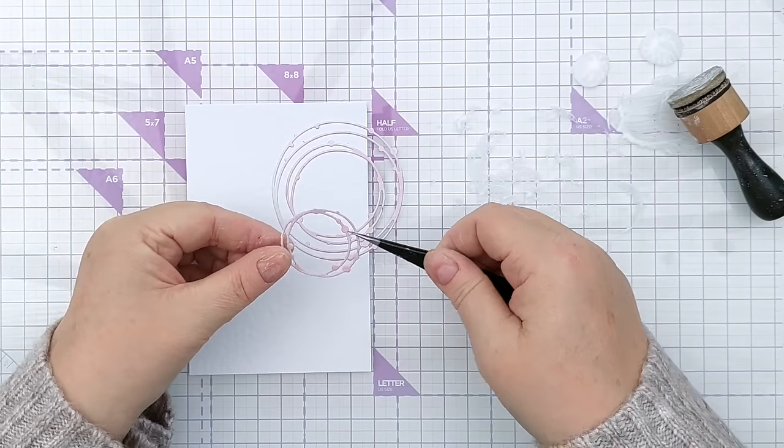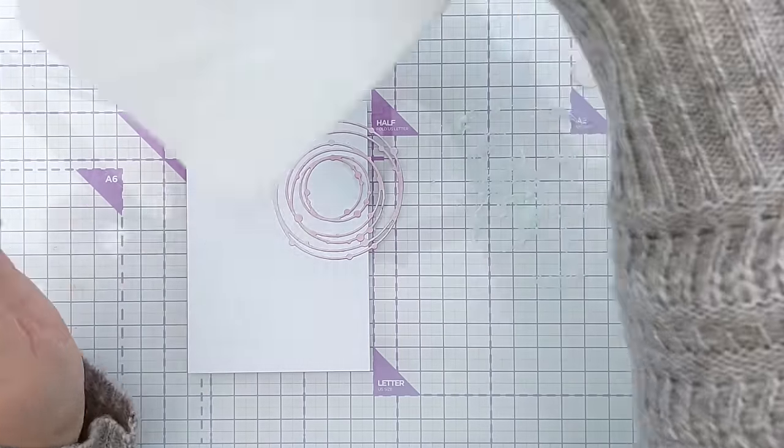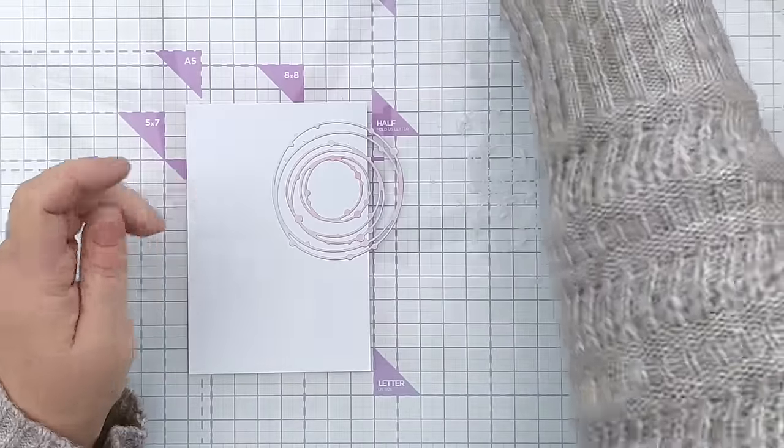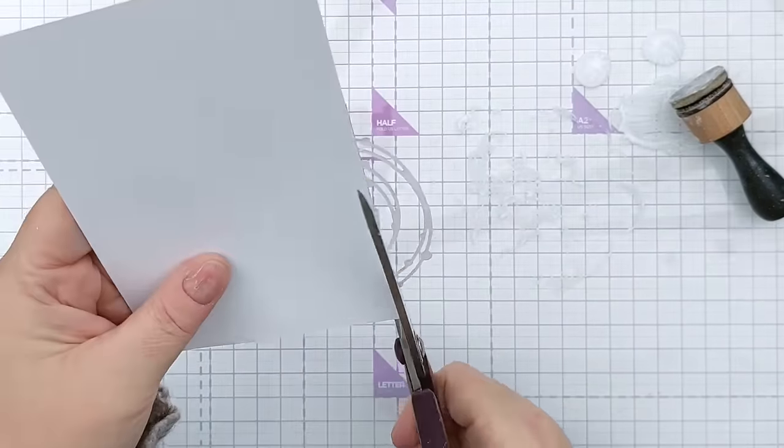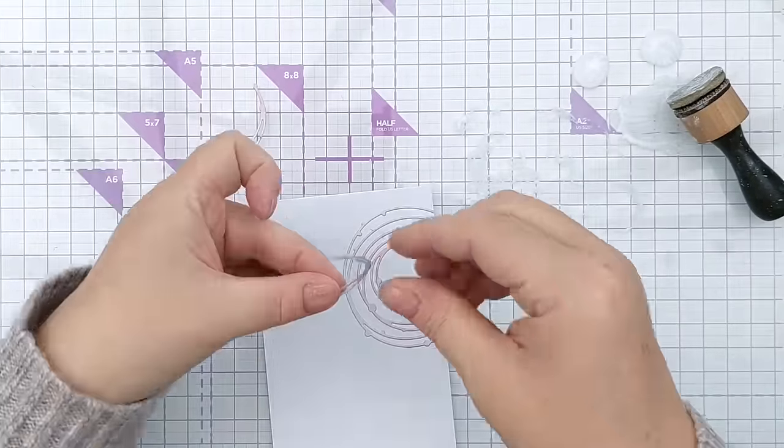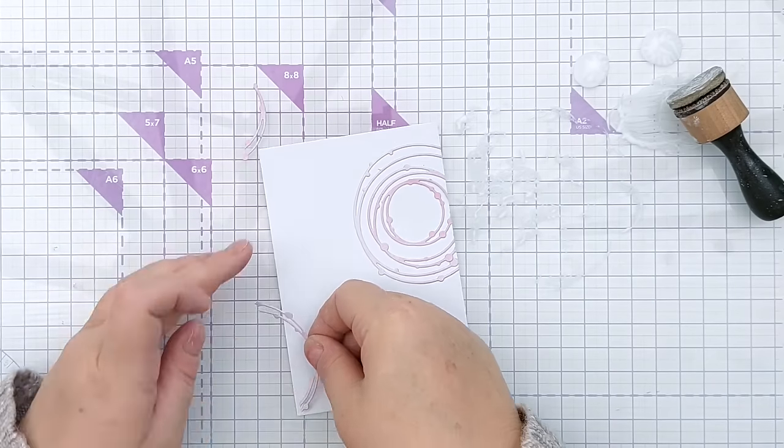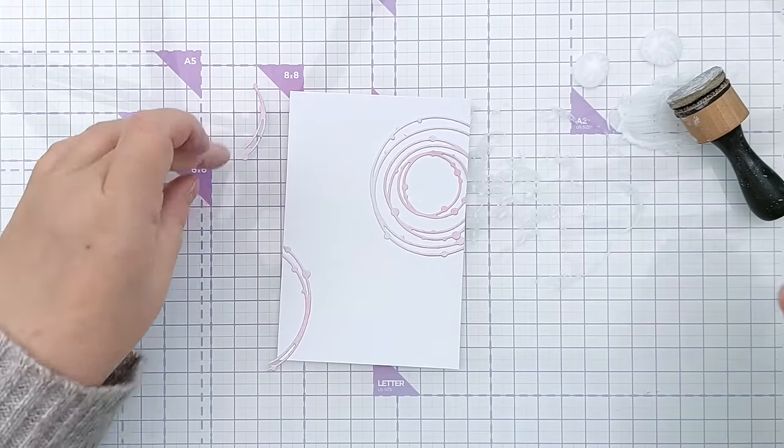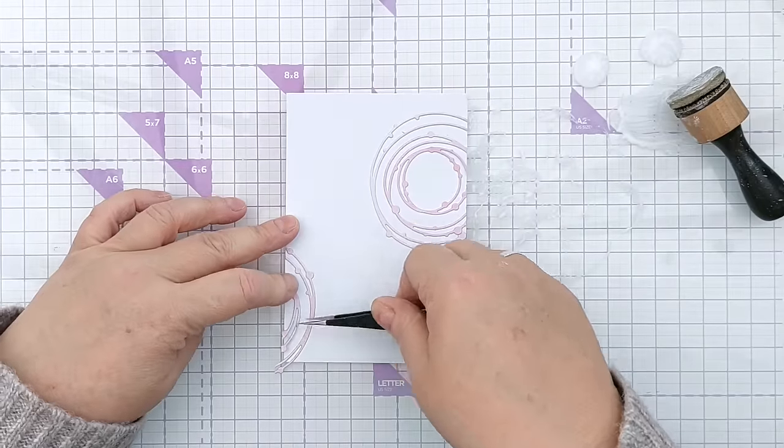For this card I put my fiddly circle die cuts over to the right hand side towards the top and then cut off the overhang. Waste not want not, I decided to stick the leftover bits in the bottom left hand so I've got a diagonal design happening.